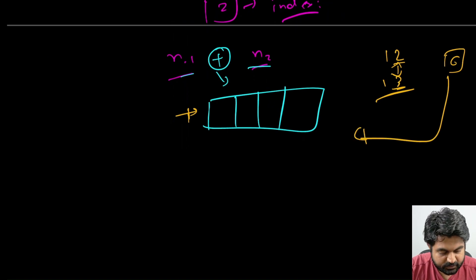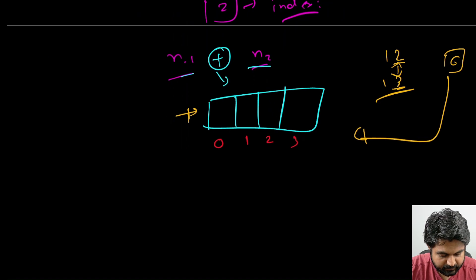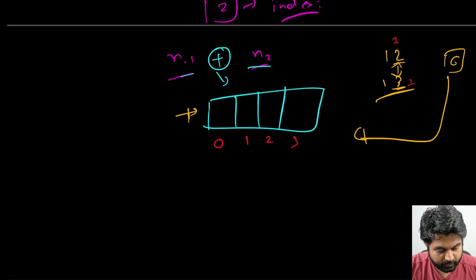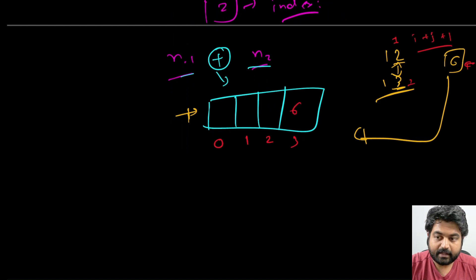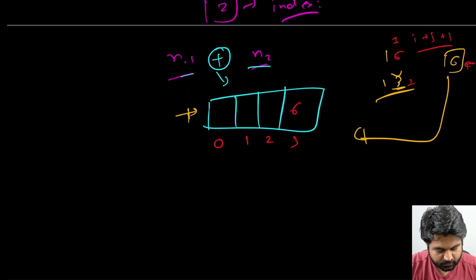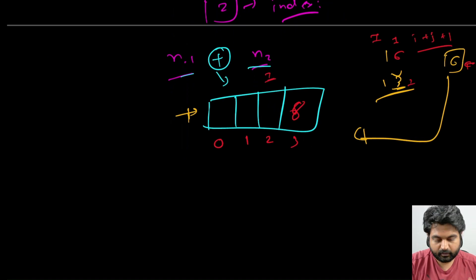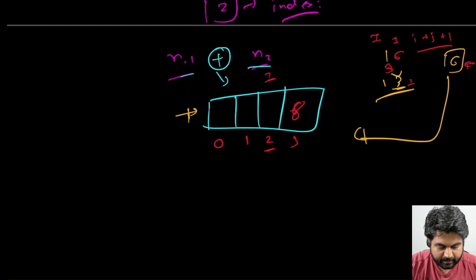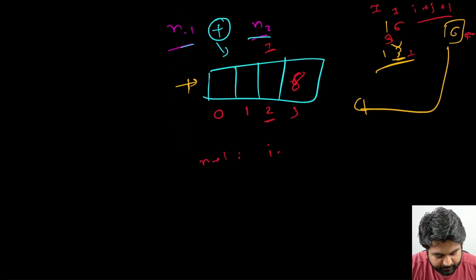Let's say 3 multiplied by 2 gives 6 — where does the 6 go in the array? It's determined by the sum of the index positions of the two digits. If the index positions are 0, 1, 2, 3 and both digits are at index 1, then 1 plus 1 equals 2, so we store the product at index i plus j plus 1. If there is a carry — say the result was 16 — we store 8 at i+j+1 and the carry at i+j.